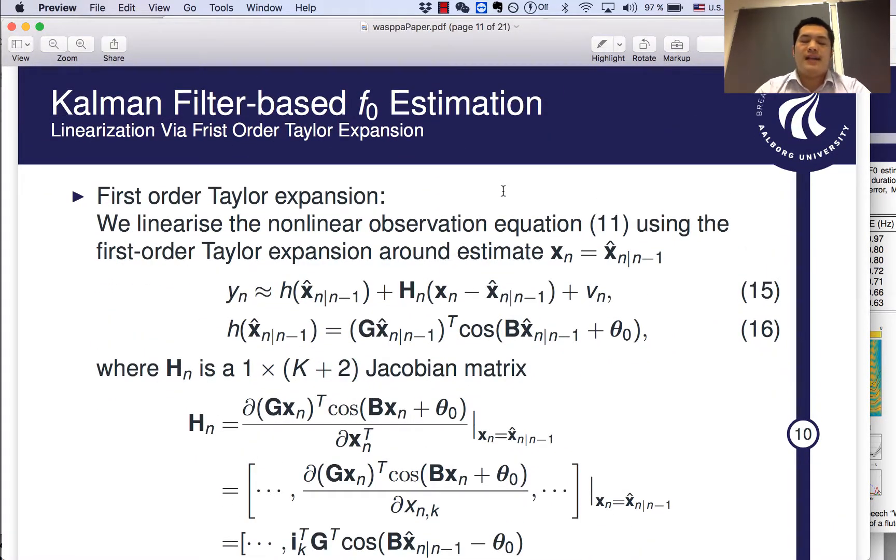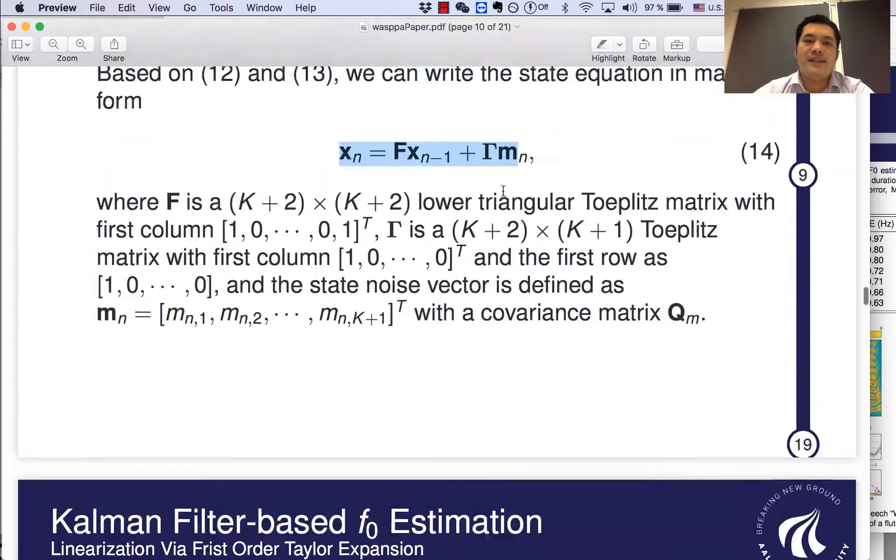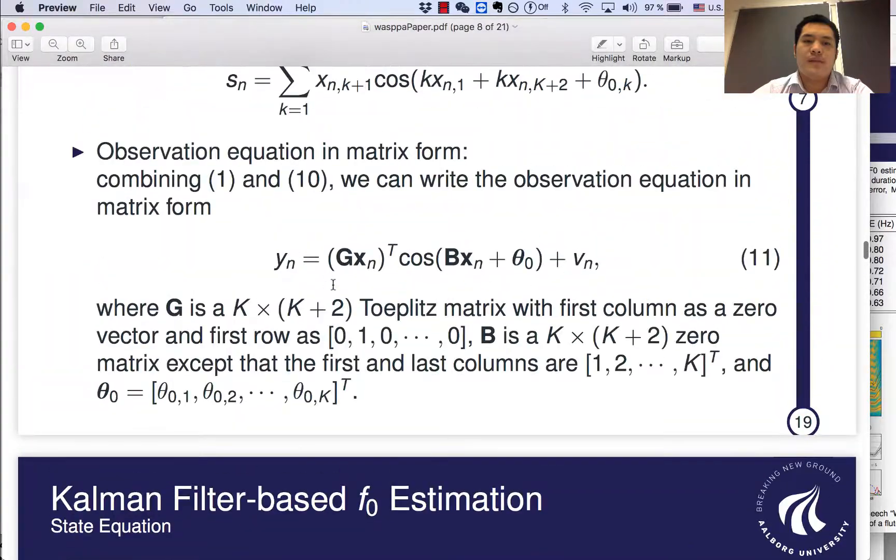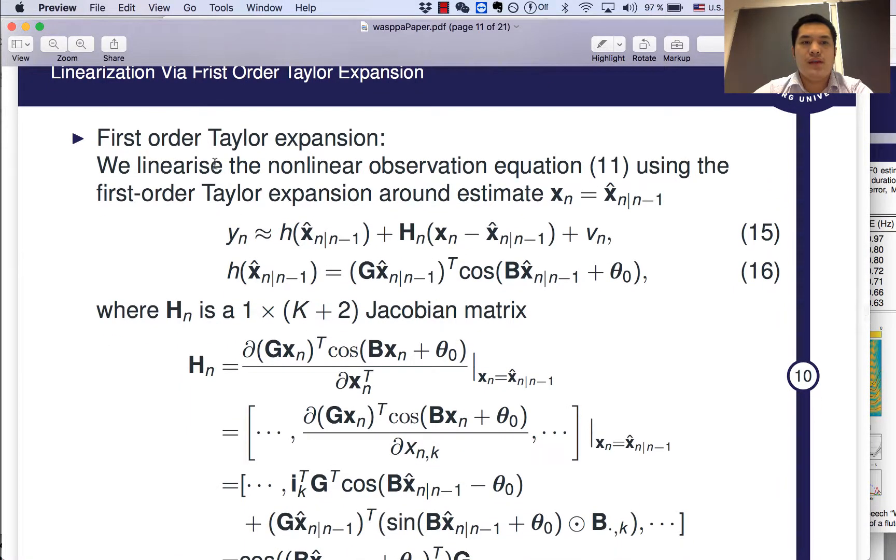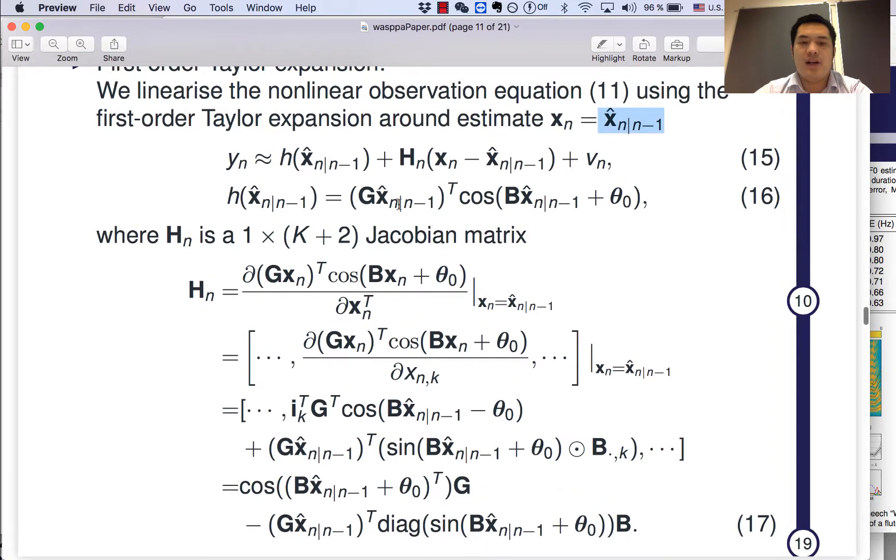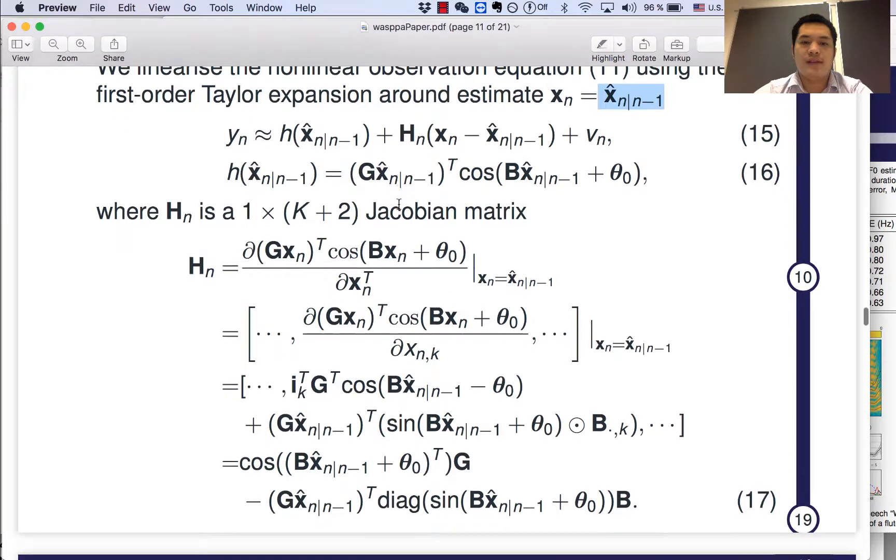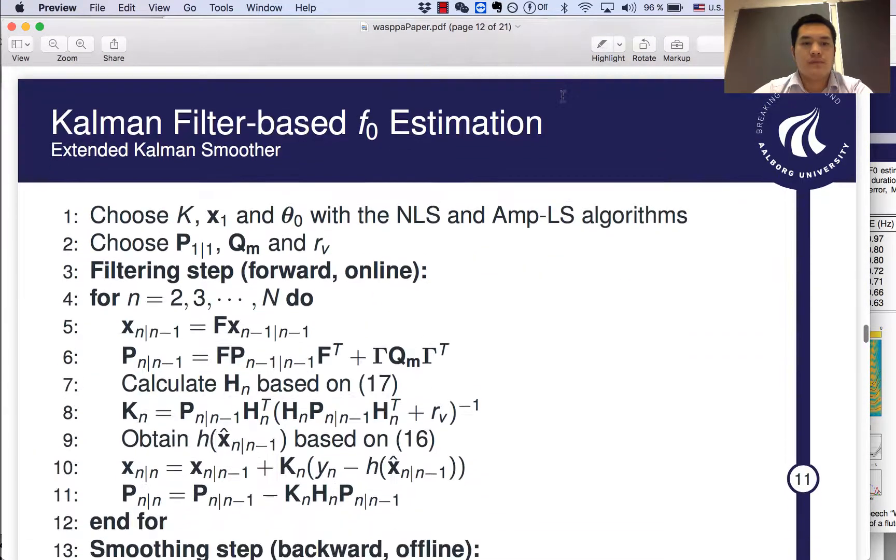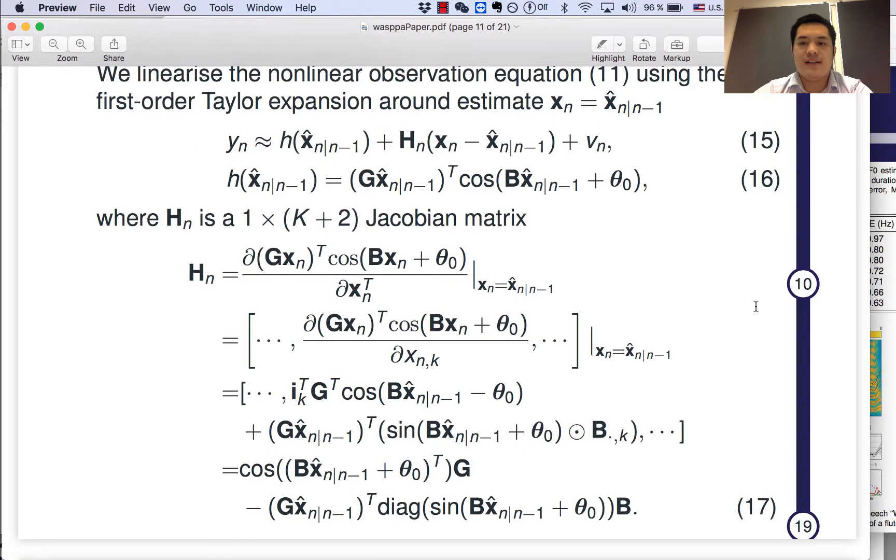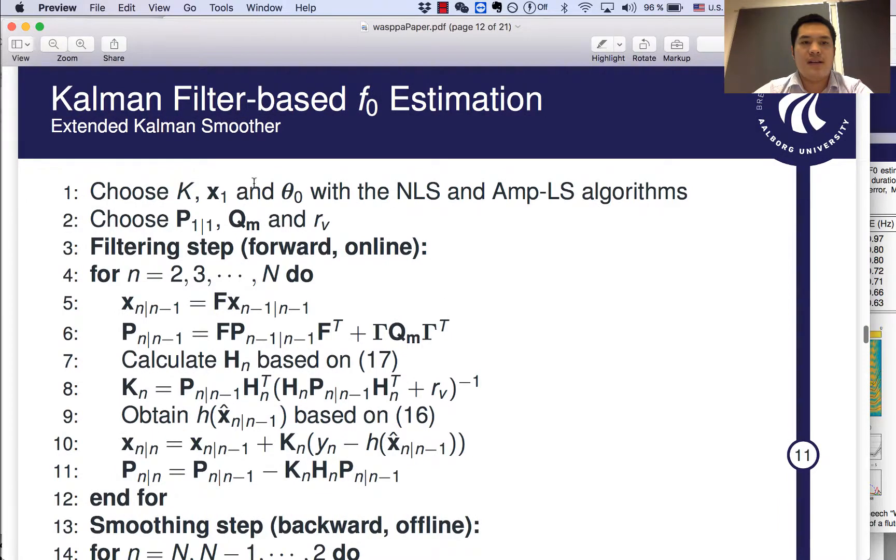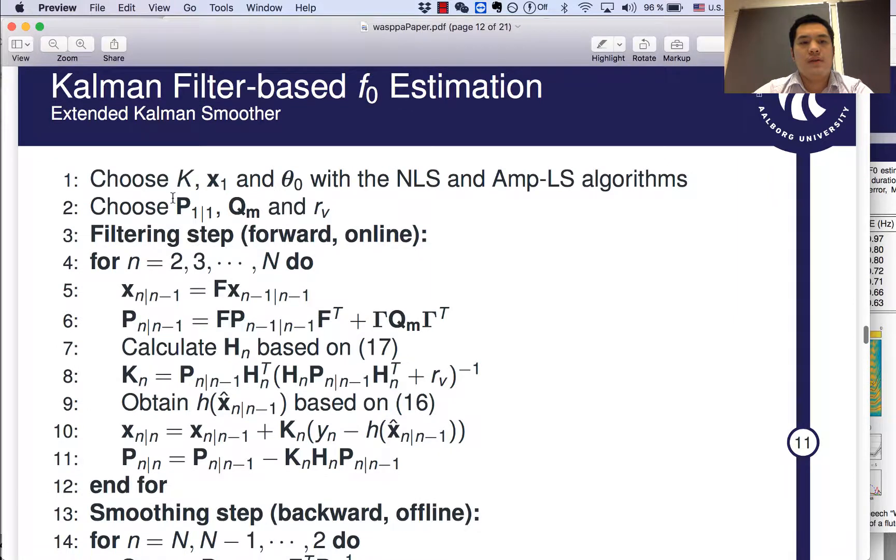Then, as we all know that for the standard Kalman filter, we cannot deal with non-linear observation equations in our problem. As you can see, the state equation is in the linear form, but the observation equation is non-linear form. So, we need to somehow linearize it. Here, we use the first-order Taylor expansion. This H_N is the Jacobi matrix. It's basically the derivative, first-order derivative matrix with respect to this vector. Now that we can use this equation 13, 15, 16, and 17, we can use the standard extended Kalman filter in our problem.